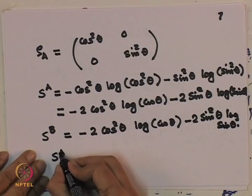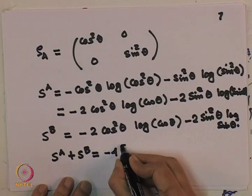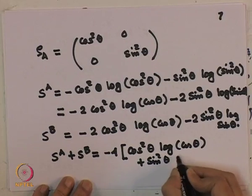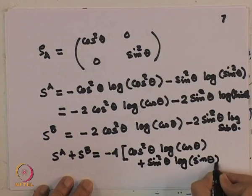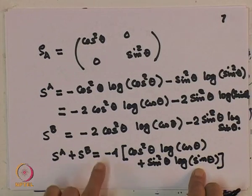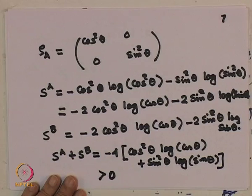Therefore my SA plus SB, when I add them up, I get minus 4 cos²θ log cos θ minus 4 sin²θ log sin θ. Remember cos θ and sin θ are less than 1, so the logarithm is negative, but there is a minus sign in front which makes it greater than 0. But the pure state ρAB had entropy 0. So this tells you that the entropy of the mixed state is less than the sum of the entropies of the two components.